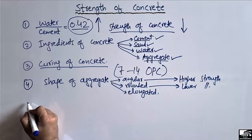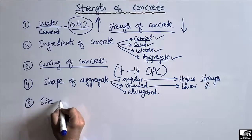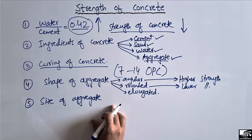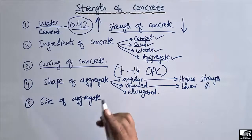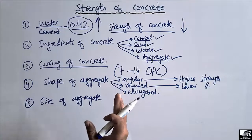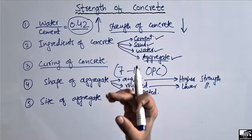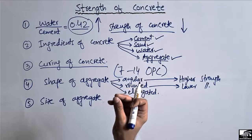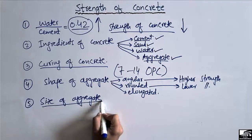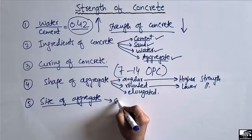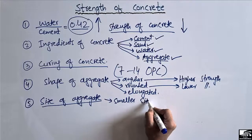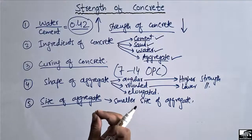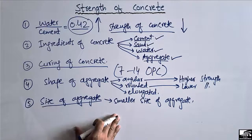The fifth factor that affects the strength of concrete is the size of the aggregate. The size of aggregate plays an important role in affecting the strength of concrete. Larger aggregate size lowers the strength, while smaller aggregate size increases the strength, because larger aggregate makes concrete a more heterogeneous material and thus decreases its strength. Therefore, we mostly prefer smaller aggregate size.